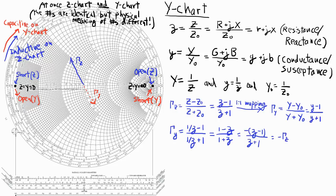On the bottom half, the opposite is true. As z becomes more negative, I become more capacitive on the z chart. And as y becomes more negative, I become more inductive on the y chart.